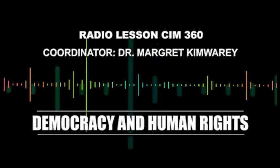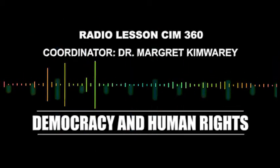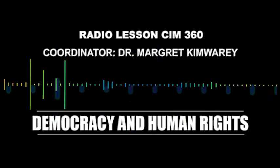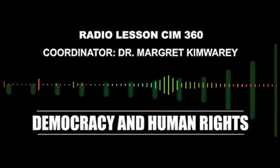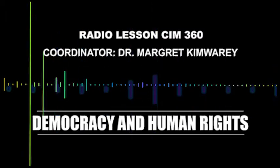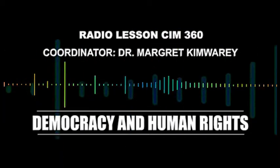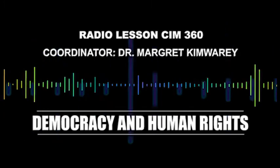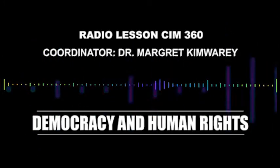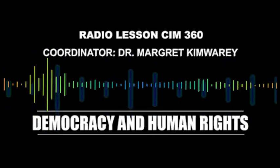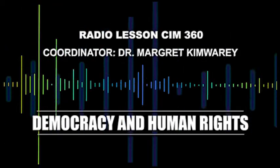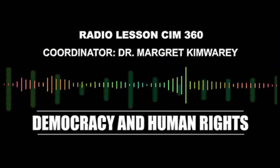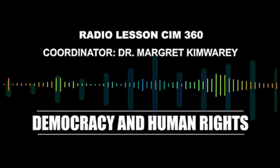Class, we've come to the end of our lesson today. Anyone to tell us what we've learned today? Yes, Rachel. Today we've learned about democracy and human rights. We've seen the meaning of democracy and also looked at the key aspects of a real democracy, whereby we have social aspects, political aspects, and economic aspects. We've also talked about the classification of human rights and freedoms. Good, Rachel.